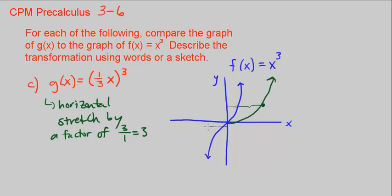Again, you multiply each value by 3. 1, 2, 3. And our graph is going to be that wide. So horizontal stretch, it's really pulling the graph horizontally outward by a factor of 3 times. All right, so that's going to end for CPM pre-calculus chapter 3, number 6.